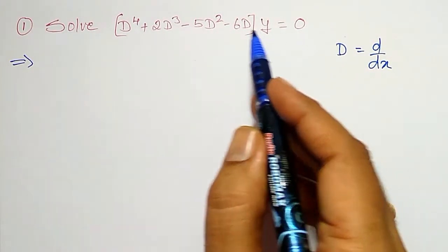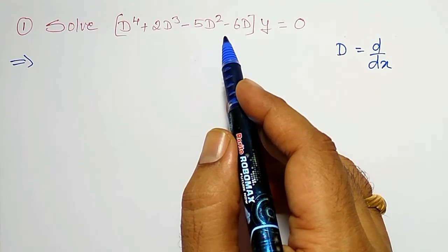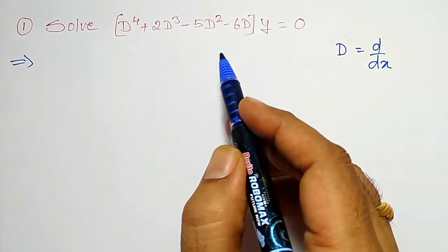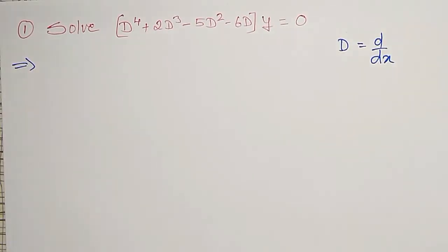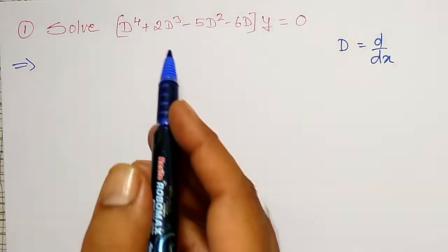Now, as the right hand side is zero, therefore it is a homogeneous differential equation. If it is a homogeneous differential equation, then the solution contains only the general solution as a complementary function. Therefore, we have to find out the roots of this.